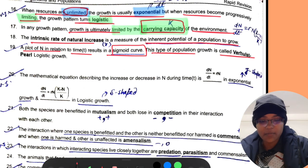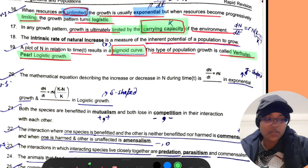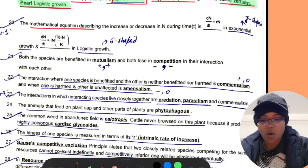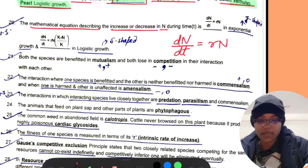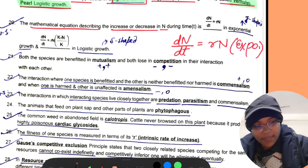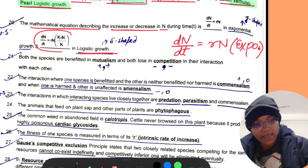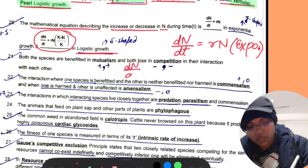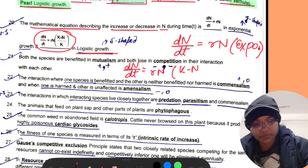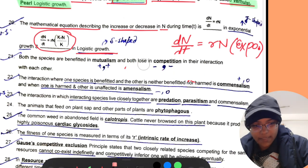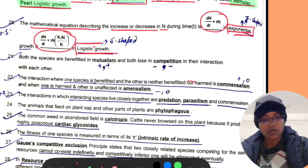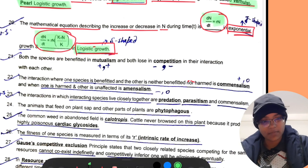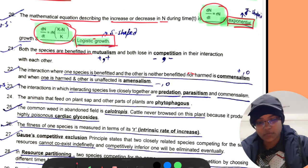The intrinsic rate of natural increase is the measure of inherent potential of the population to grow. A plot of N in relation to time results in sigmoid curve. This type of population growth is called Verhulst-Pearl logistic curve. The mathematical equation for exponential growth is dN/dt = rN, and for logistic growth is dN/dt = rN(K-N)/K. These formulas are very important for your exam.